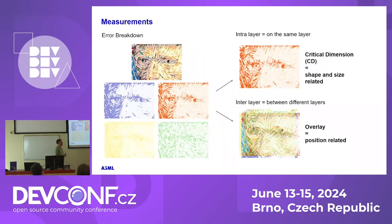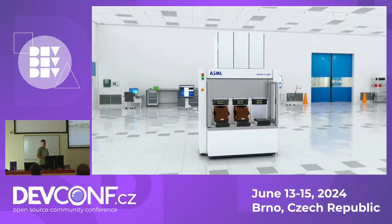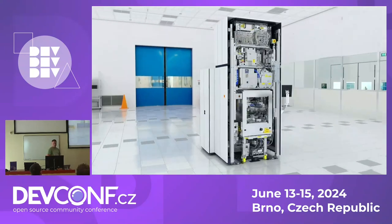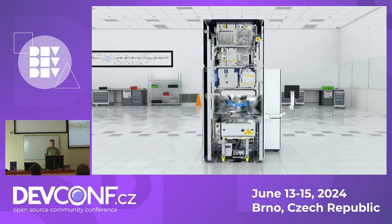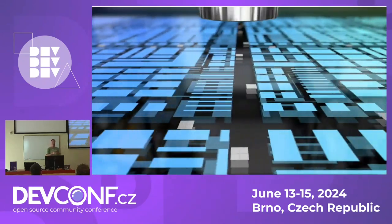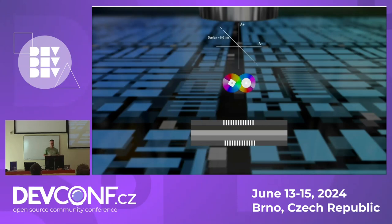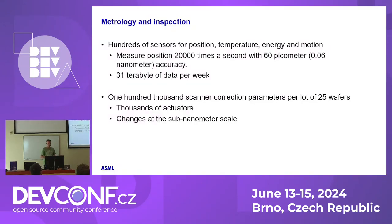We measure in different areas. One is critical dimension, which is within a layer. Overlay is position-related — what we saw before with layers not nicely aligning, that's what we call overlay. We have different machines to measure these things because you can't really put it under a microscope or use a default camera. We measure stuff at nanometer or even picometer level, which is even one scale below, and you need special equipment for that. We have two types for that. What you see is we basically send light beams of different colors to the wafer, and then we measure the diffraction of those light beams. Based on that, we can calculate if the layers are nicely aligned or not.